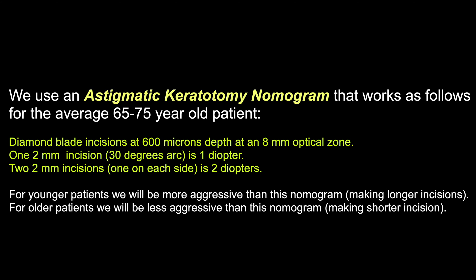We use an astigmatic keratotomy nomogram that works as follows for the average 65 to 75-year-old patient. The diamond blade is preset to 600 microns depth. We apply that 600 micron diamond using an 8mm optical zone. Each 2mm incision, or 30 degrees of arc, produces one diopter of corneal flattening. Two 2mm incisions, one on each side, will produce two diopters of corneal flattening. For younger patients, we will be more aggressive than this nomogram, making longer incisions. For older patients, we make shorter incisions.